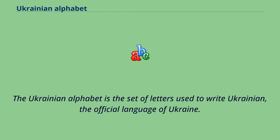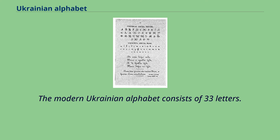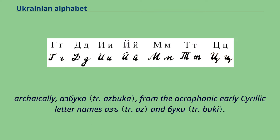The Ukrainian alphabet is the set of letters used to write Ukrainian, the official language of Ukraine. It is one of the national variations of the Cyrillic script. The modern Ukrainian alphabet consists of 33 letters. In Ukrainian, it is called from the initial letters, or archaically from the acrophonic early Cyrillic letter names.